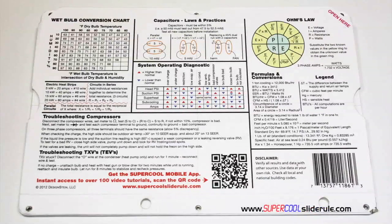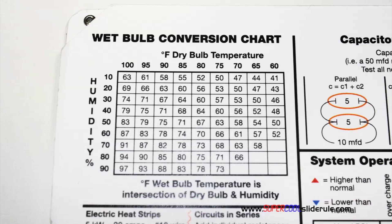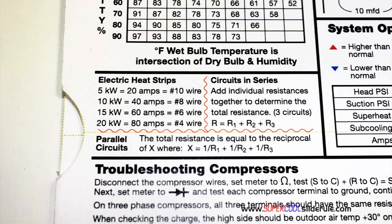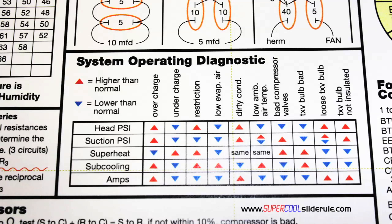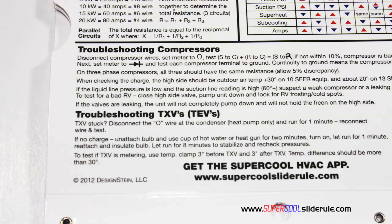The back cover contains required formulas. It has capacitors rules and practices. A wet bulb conversion chart. How to perform computations on series or parallel circuits. An electric heat strip guide. A complete system troubleshooting diagnostic chart. And how to troubleshoot compressors in TXV.